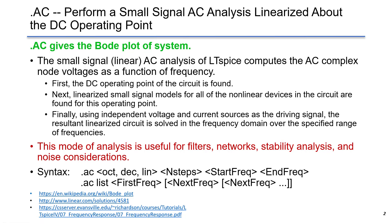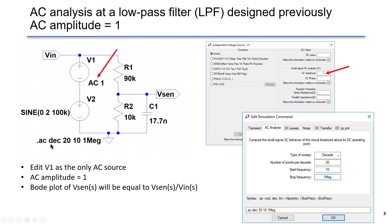The AC analysis is very useful for filter design, network, and stability analysis. Let's continue the low-pass filter example from the previous lecture. We have chosen R1, R2, and C1 to give minus 60 dB attenuation at 100 kHz noise. In this case, we use AC analysis and set V1 as the only AC source.